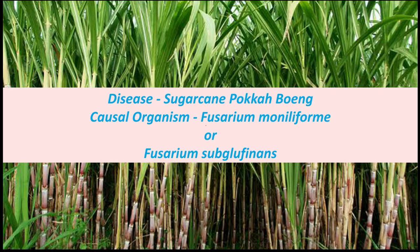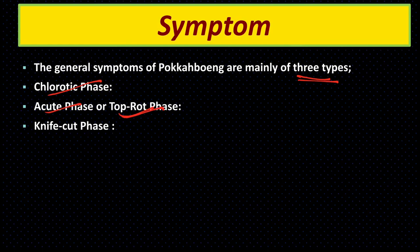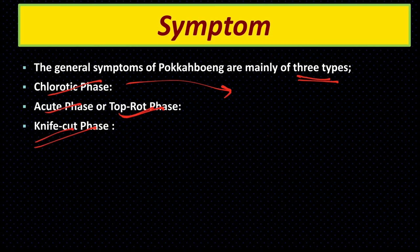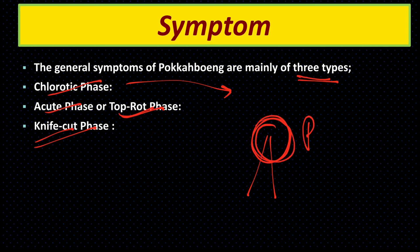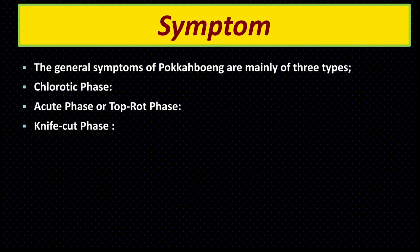Poca Boeng disease is caused by the fungus Fusarium moniliforme or Fusarium subglutinans. The general symptoms are mainly of three types: first is the chlorotic phase — yellowing of leaves; second is the acute phase or top rot phase — rotting of the upper portion of the stem; and third is the knife-cut phase — horizontal cuts form in the stem in a very distinct pattern.